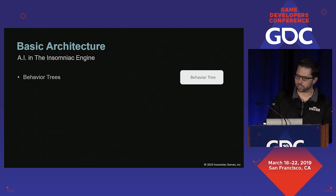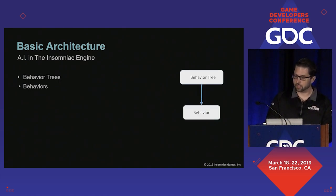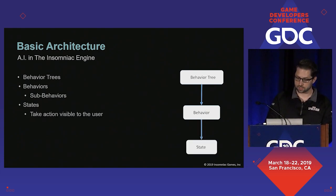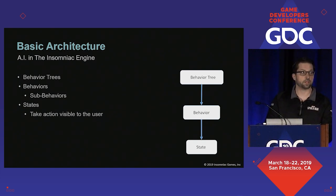At the top level we have a behavior tree that decides on a behavior to run. A behavior can have an arbitrary number of sub behaviors, but eventually a behavior will instantiate a state. These are our leaf nodes and they control animation, motion, and perform other player-facing actions.